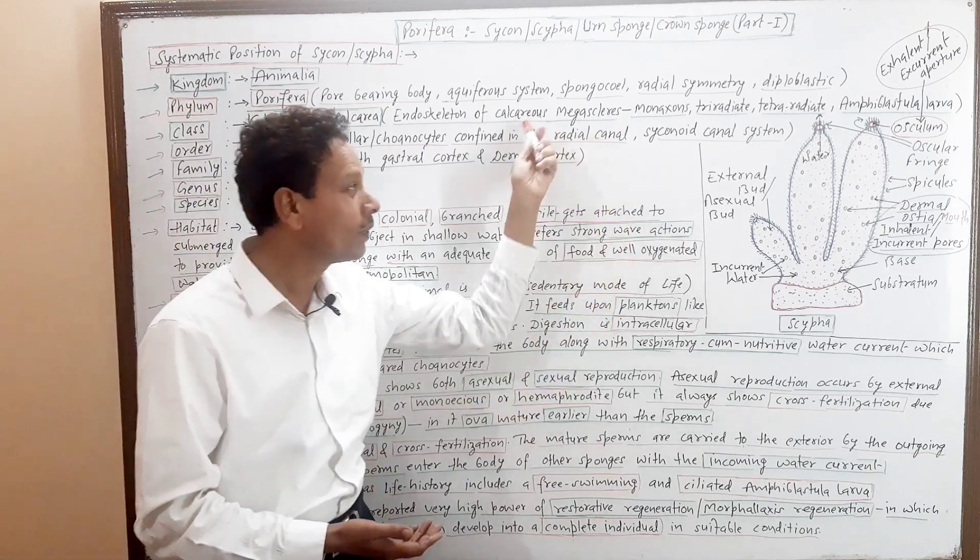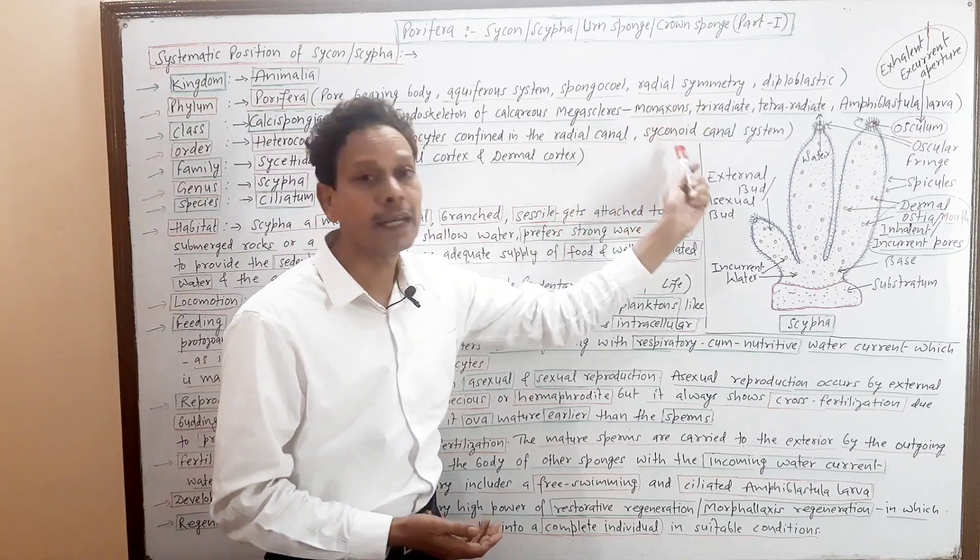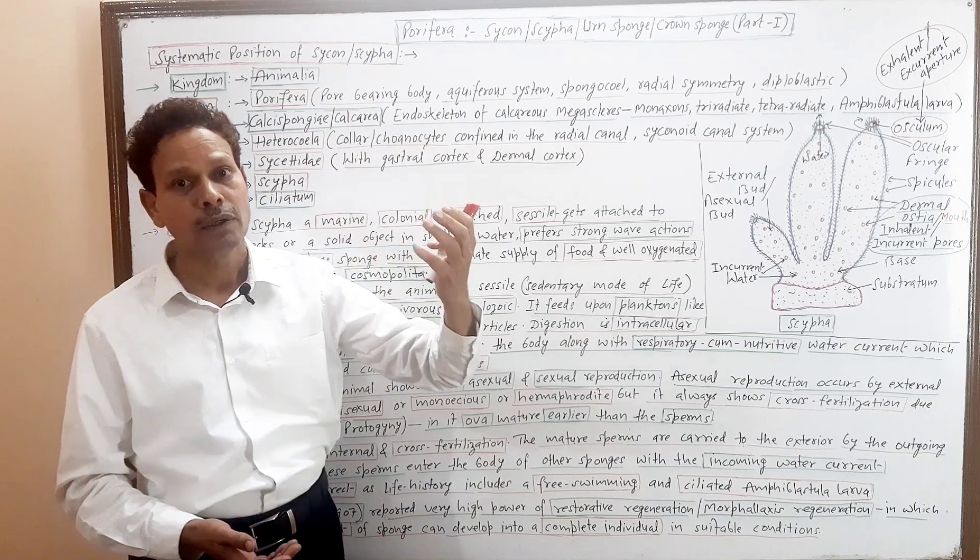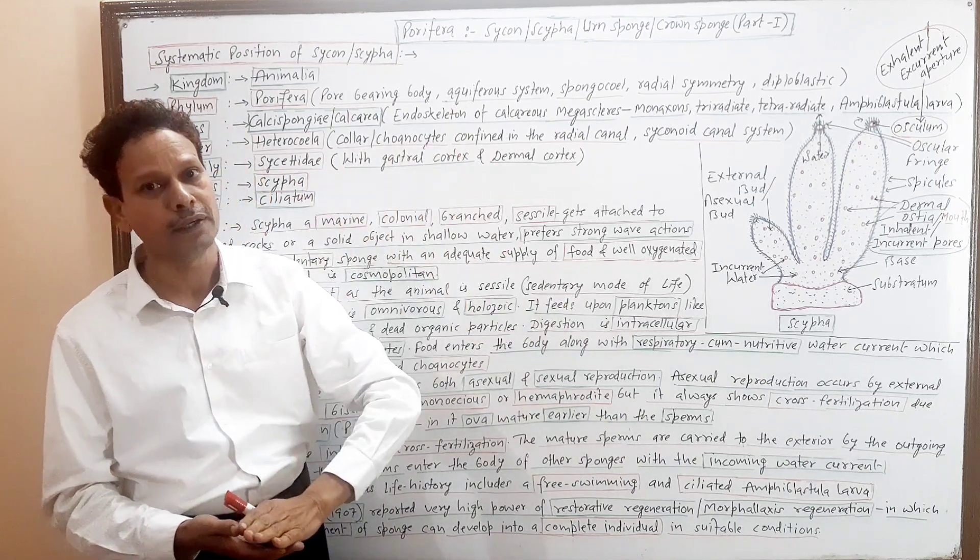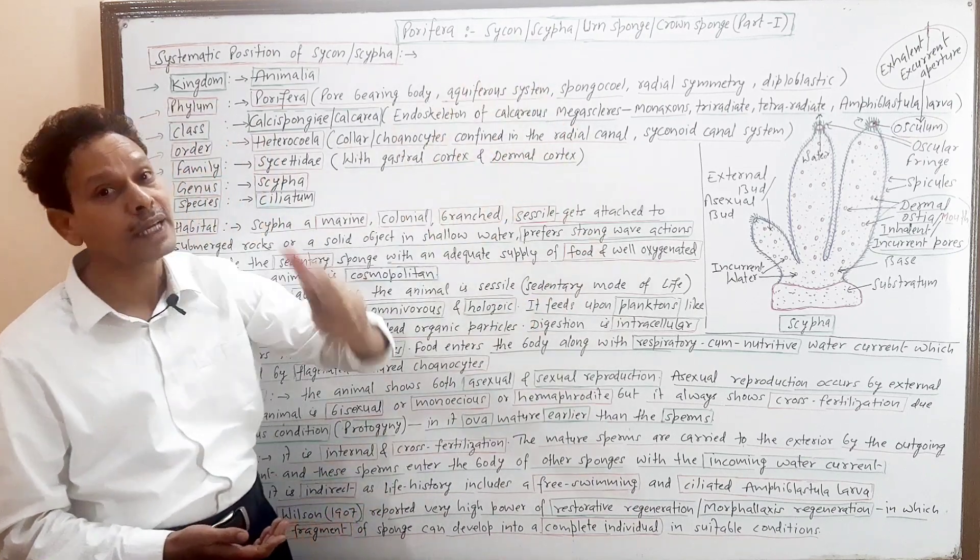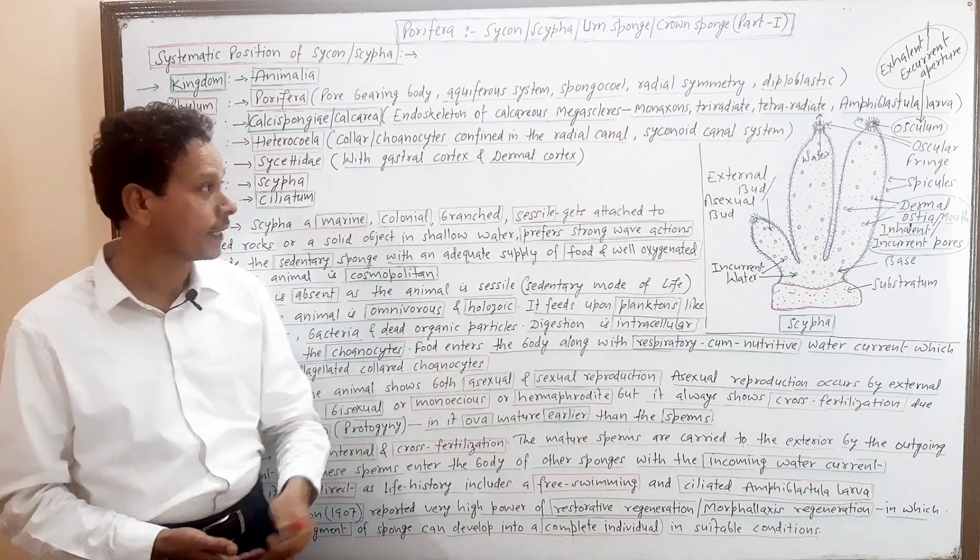The choanocytes are confined in the radial canals. We will discuss the canal system in next lectures - radial canals. So on radial canals, these collar cells choanocytes are confined. The canal system is syconoid canal system. We discussed types - syconoid, leuconoid. Today we will discuss type Sycon Scypha. In this animal, the canal system is syconoid canal system.